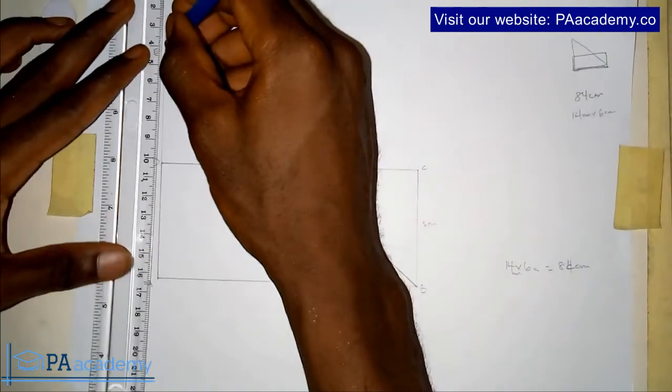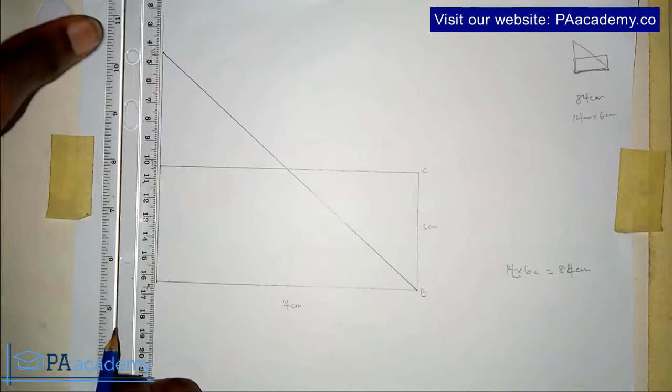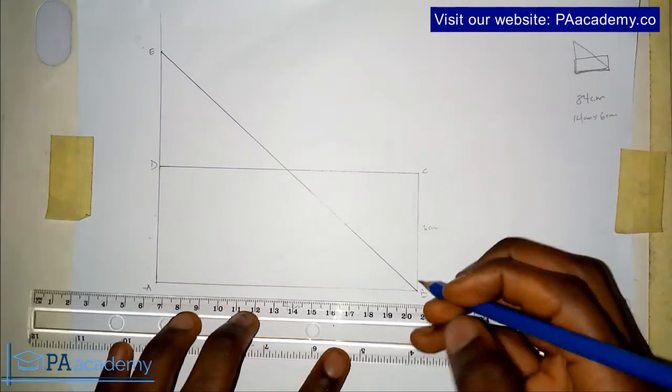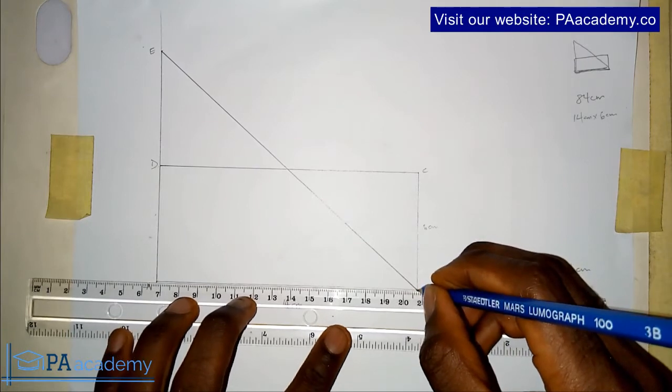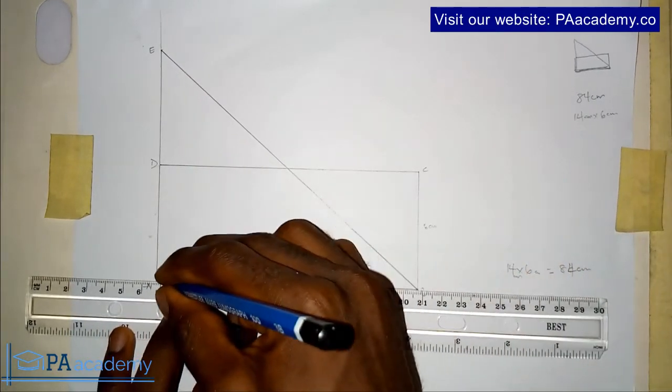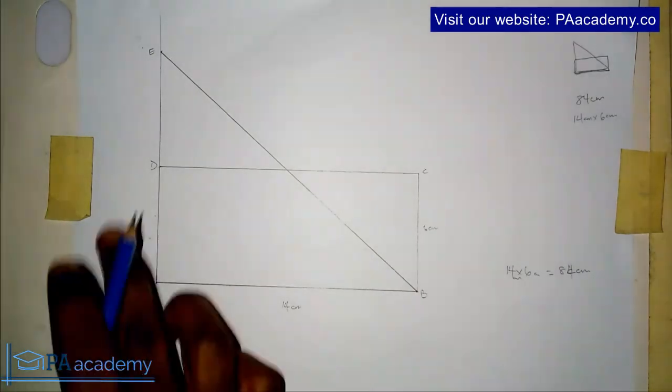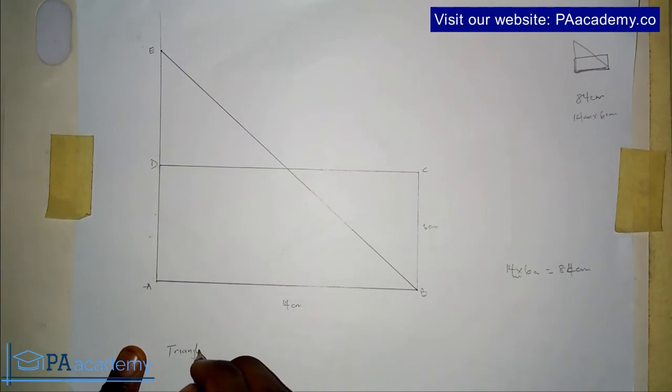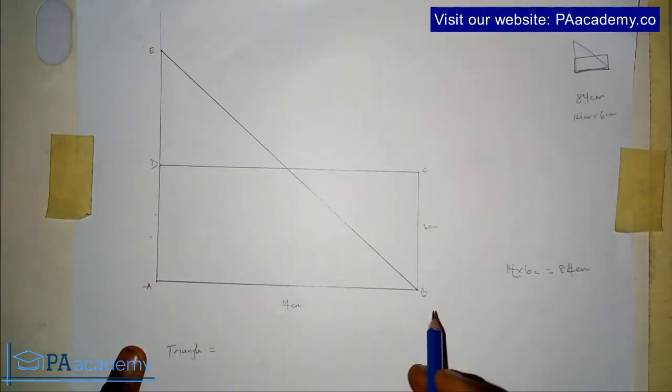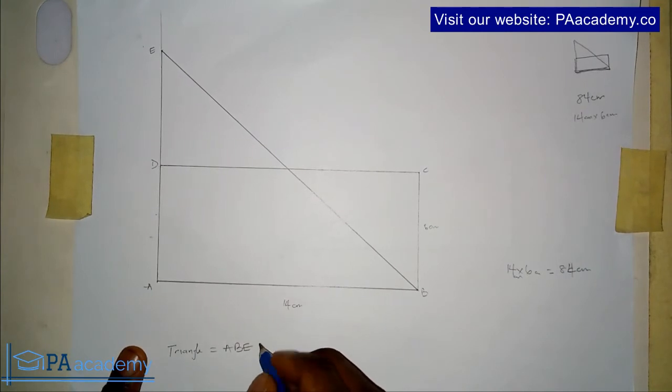So now with this, we already have the triangle. If you have to look at this triangle ABE, so now we have triangle ABE.